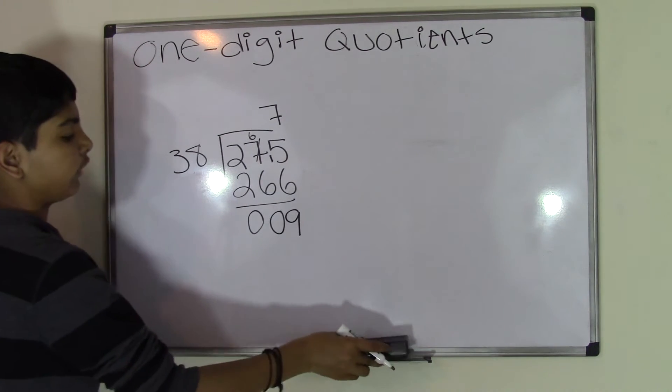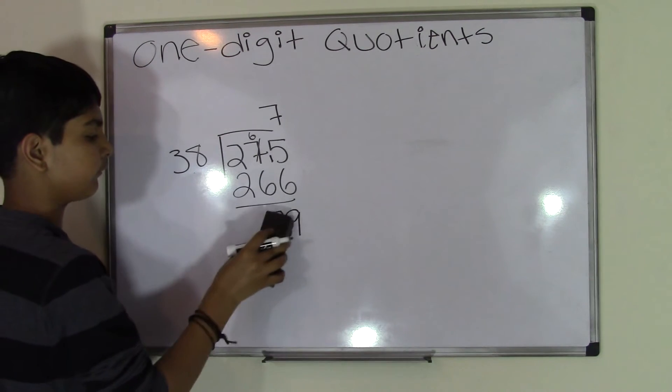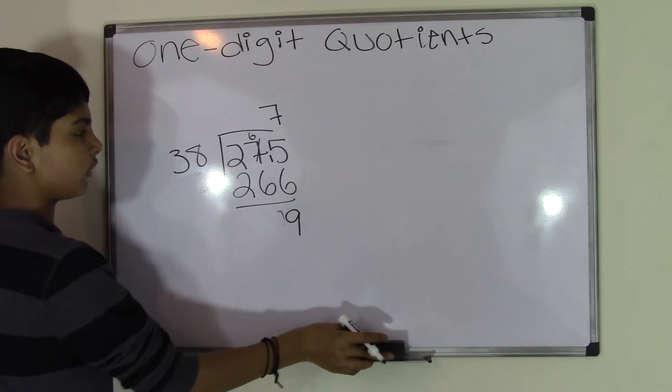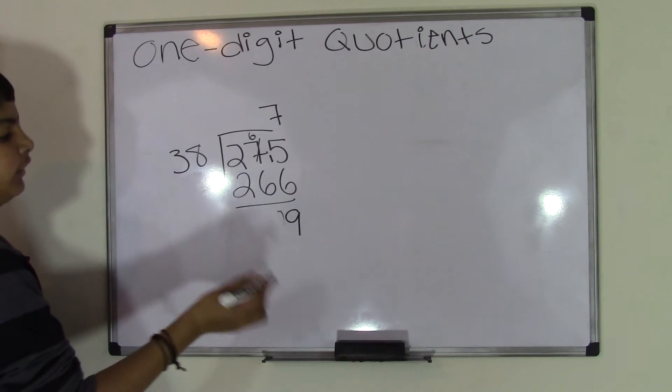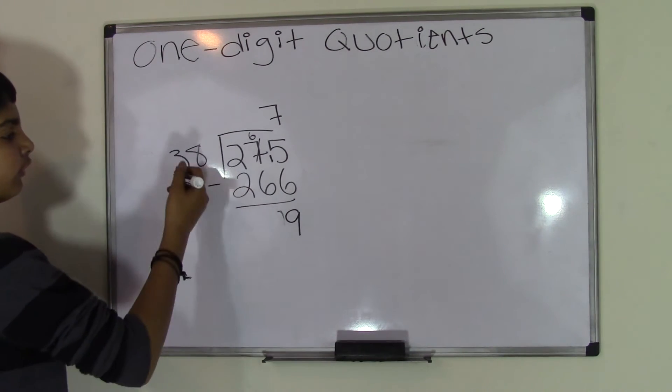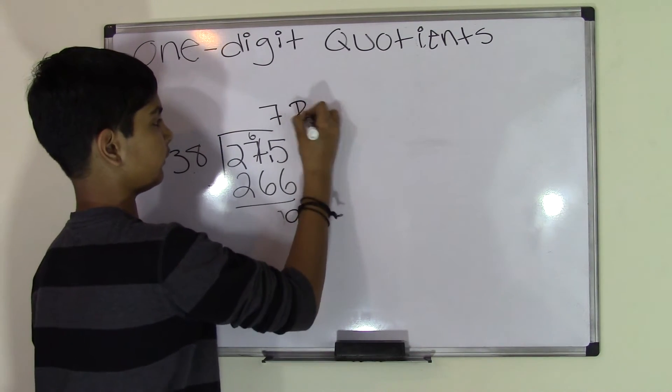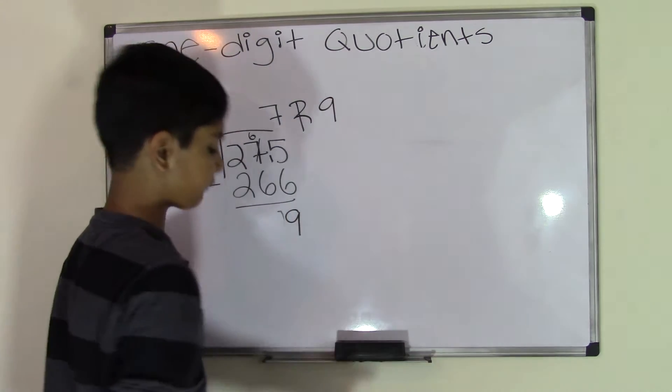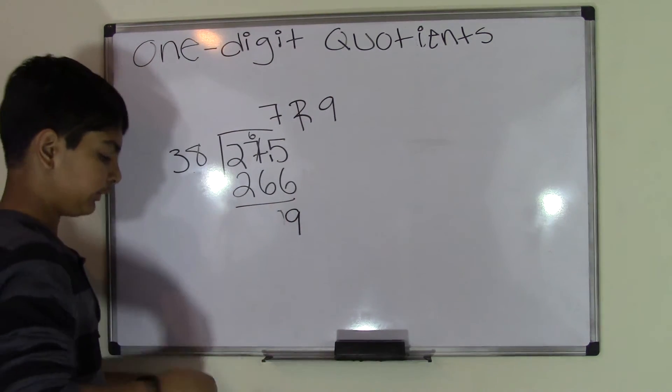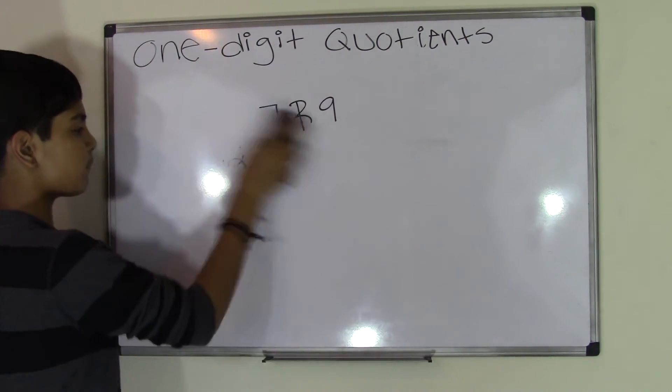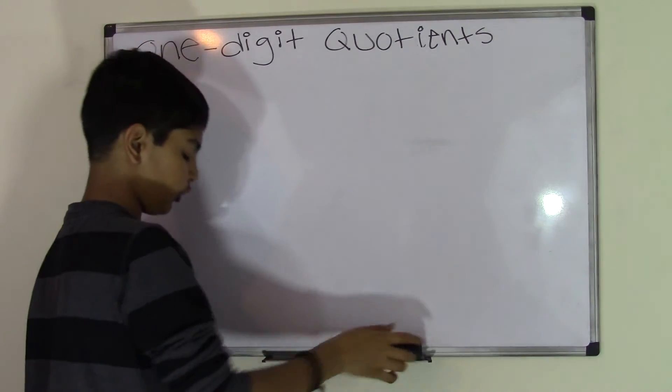Now we get a number 9. Since we cannot do 9 furthermore, our quotient will be 7, remainder 9. Now let's do another example.